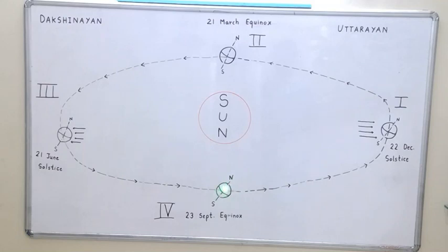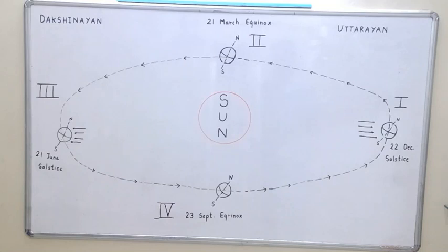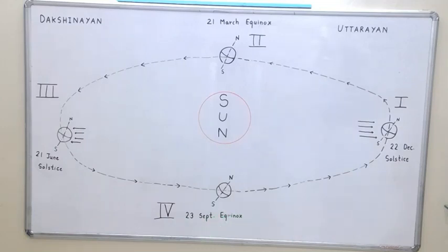After three more months, in the fourth stage, both the northern hemisphere and southern hemisphere receive the same amount of light, and the maximum light from the sun falls on the equator. This occurs on 23rd September and the day is called equinox.